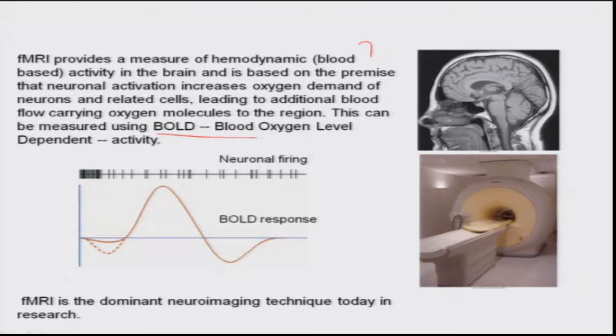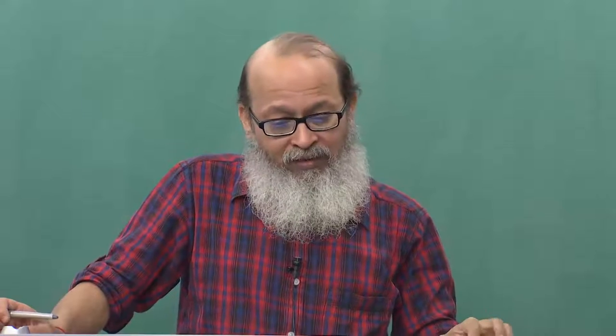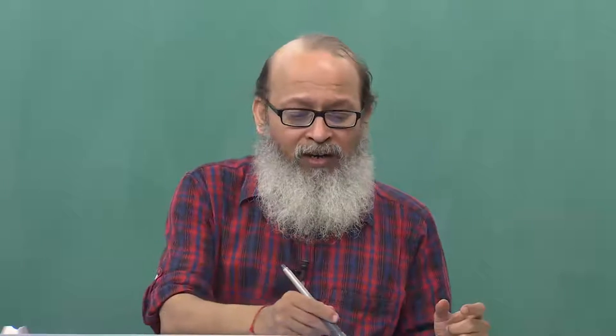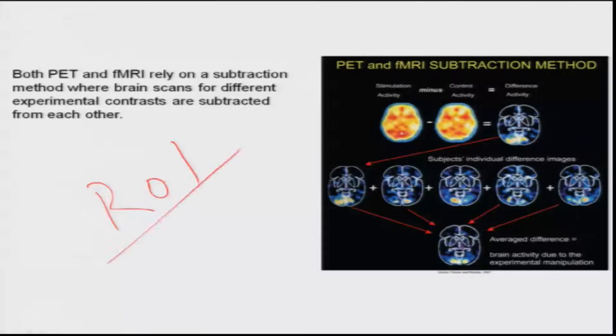This blood-based activity is called BOLD — blood oxygen level dependent activity. If you give a demand to the brain in a certain area, we can see which area of the brain does mathematics, for example. But you cannot image the whole brain at once — these all take slice by slice. You have to define what you call an ROI — region of interest.